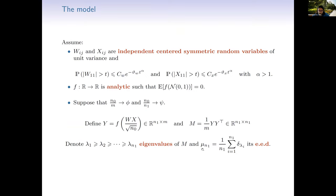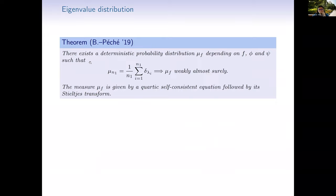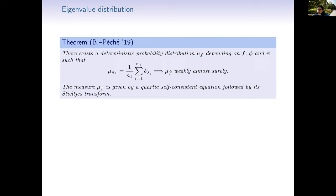I look at the empirical eigenvalue distribution (ESD), which gives information on the macroscopic behavior of eigenvalues. The first theorem states that there exists a deterministic limiting probability distribution μ_f for the ESD, described by a quartic self-consistent equation for the Stieltjes transform. It's more complicated than the usual semicircular law (quadratic) or Marchenko-Pastur (quadratic); here it is degree four. It depends on f, φ, m, ψ, but not on the distribution of W and x — so it's a universal eigenvalue distribution.